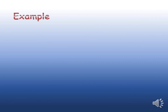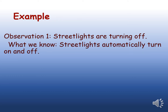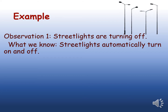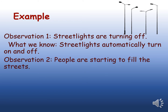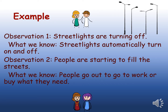Another example: We observed that street lights are turning off. We know that street lights automatically turn on and off. We also noticed that people are starting to fill the streets. We know that people go out to go to work or buy what they need. What do you think is happening? We can guess that it is early morning.